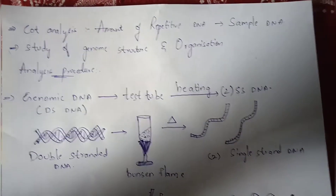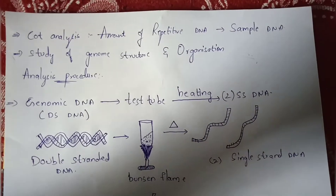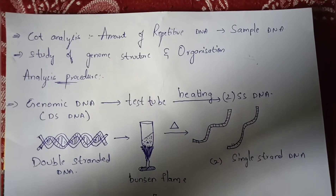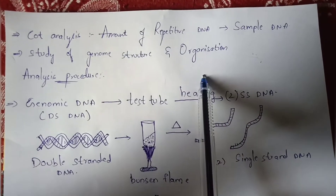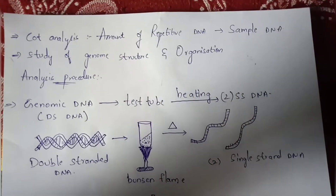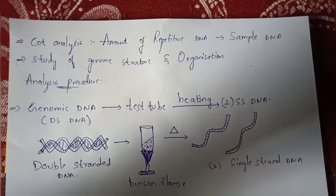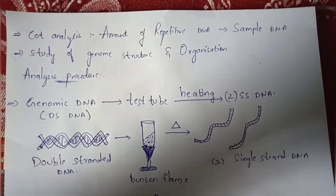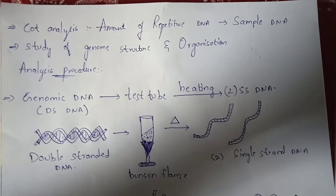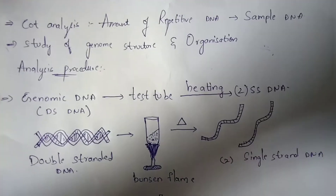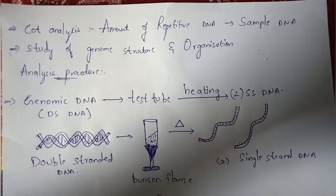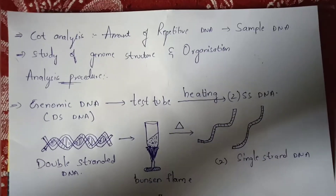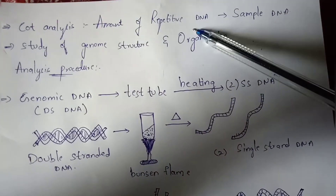The main use of Cot curve analysis is to study genomic structure and organization. Genomic structure mainly includes pseudogenes, intergenic DNA, LINEs (Long Interspersed Nuclear Elements), and SINEs (Short Interspersed Nuclear Elements).